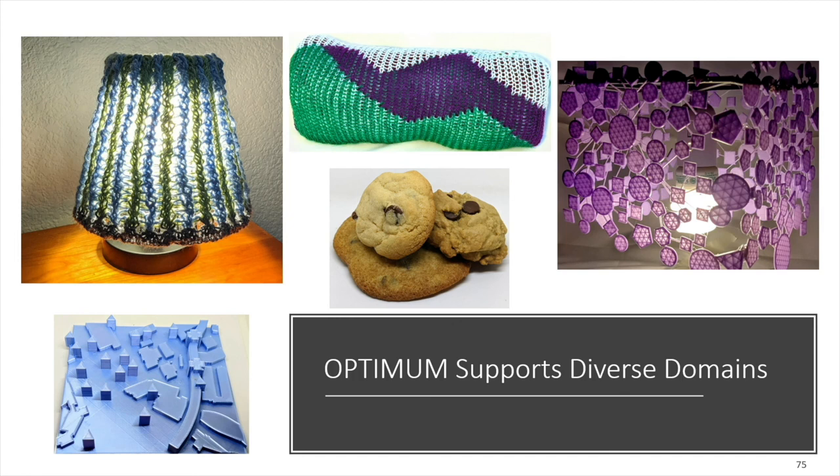I've done a lot of work using Optimum in a variety of different domains, some a little more silly than others. We've done a lot of work in the space of machine knitting and creating different automatically generated machine knitted objects with different physical properties. We've also looked at creating tactile maps for blind people, where the blind person is the domain expert and they apply their knowledge of how they navigate the world to create a tailored map. And also some silly examples like creating different flavors and textures of chocolate chip cookies, whether cakey or chewy or crispy, and replication of prior work in the 3D printing and fabrication space.